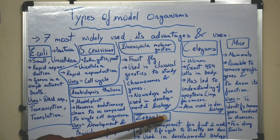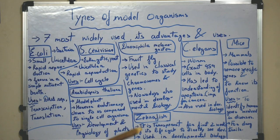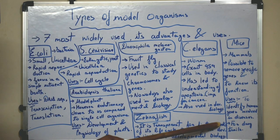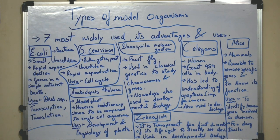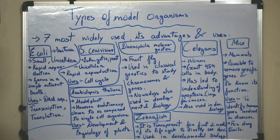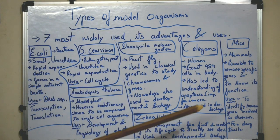The second-to-last model organism is Zebrafish. Zebrafish is a fish which is transparent for the first two weeks of its life cycle. So because it is transparent, we can directly see the developing embryo. It is extensively used in the study of developmental biology. However, it does have its flaws.